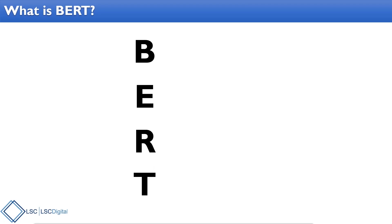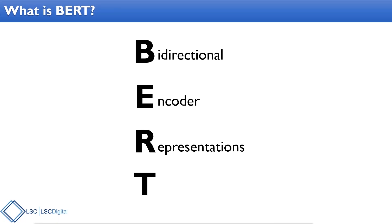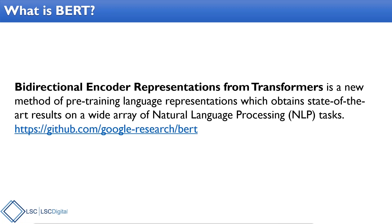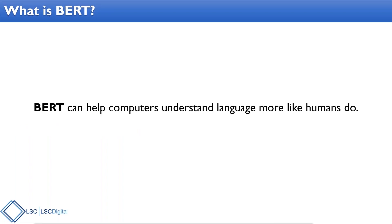BERT stands for Bi-directional Encoder Representations from Transformers. It's a new method of pre-training language representation which obtains state-of-the-art results on a wide array of natural language processing, otherwise known as NLP, tasks.